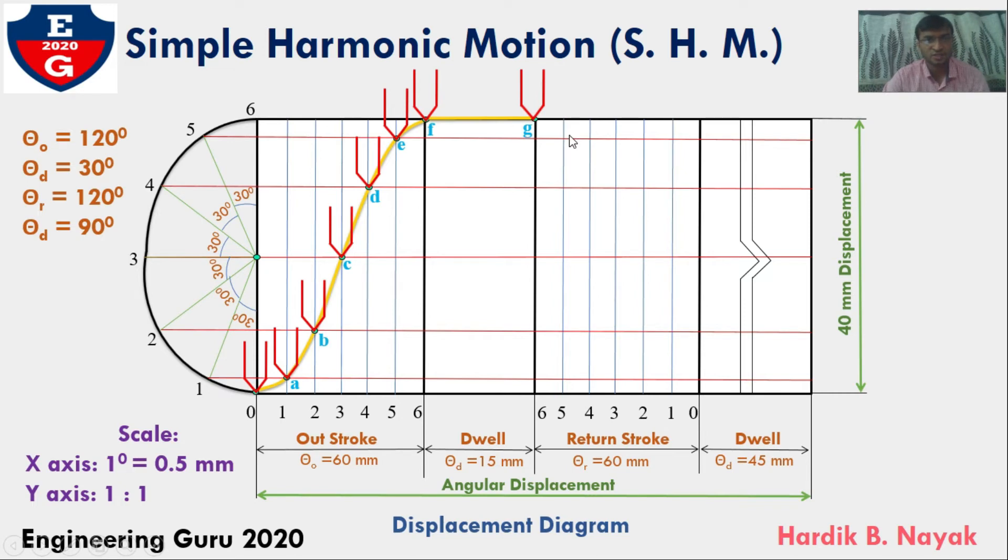After the return stroke, the follower moves to its original position. During the return stroke, in order to plot the points: if first division vertical line and first division semi-circle line intersect here, follow the same procedure and find out remaining points, denoted by H, I, J, K, L, and M.